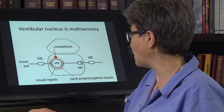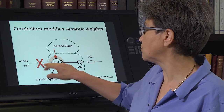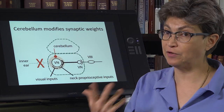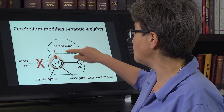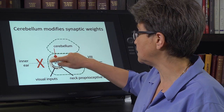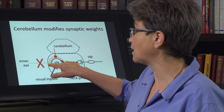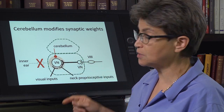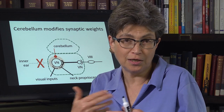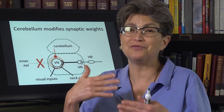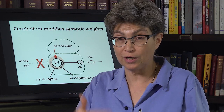What happens if we lose one ear? We already talked about having a nystagmus — that nystagmus will actually go away after a while. Why? Because the cerebellum is going to recognize that there's an ongoing problem. It's going to recognize the mismatch, because every time you make a VOR, you're not actually ending up with the right visual image. So the cerebellum learns about the error and then goes about trying to correct it.